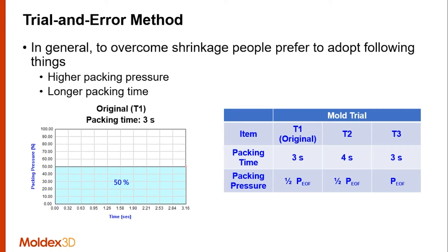Coming back to this method, to overcome the warpage problem, how people go about it is basically — let's say in this example — you have a geometry where you have your original process, and then you have a mold trial where you're trying to come up with a better process, a good process window, and optimize your process. For example, in the original process your packing time was three seconds and your packing pressure was 50% of your peak injection pressure at transfer point.